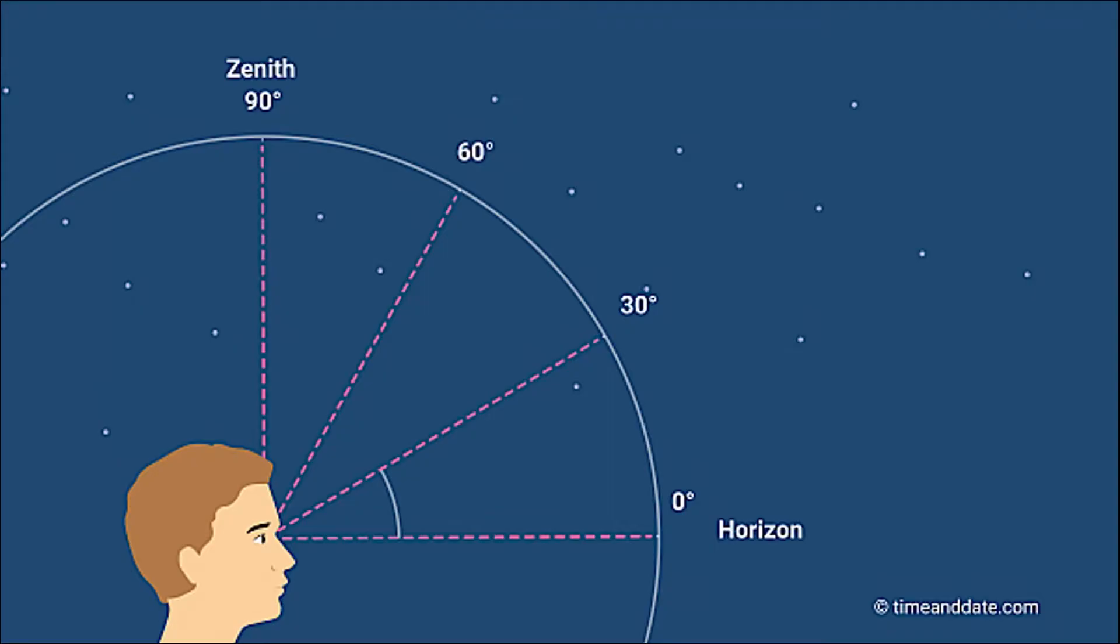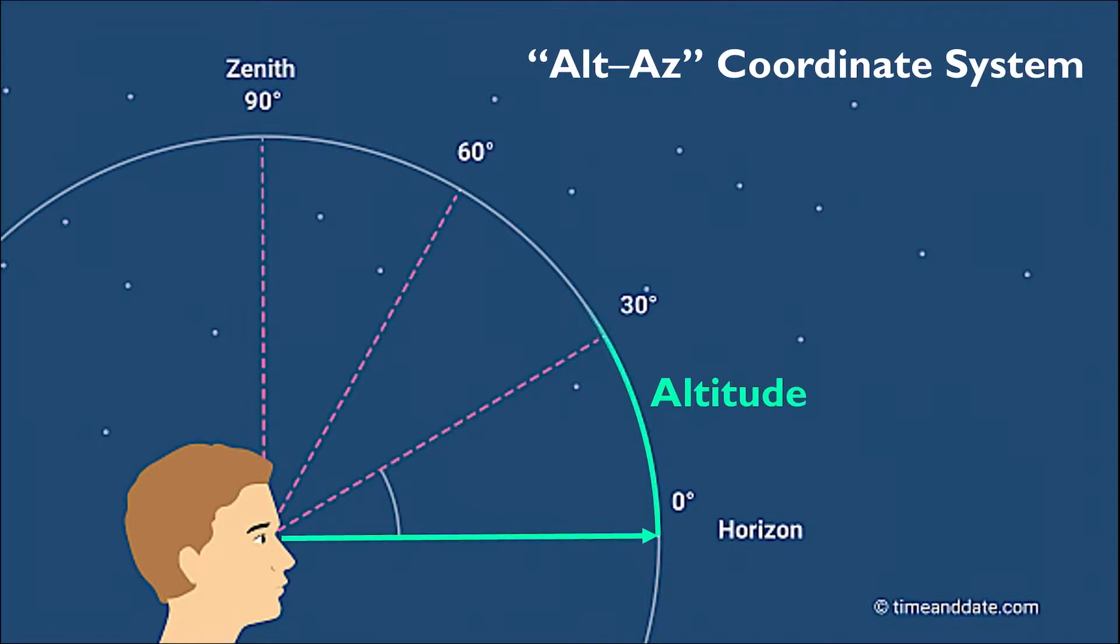In the horizontal coordinate system, sometimes also called the alt-az coordinate system because of its coordinates, you are the center. The horizontal coordinate or the altitude starts at exactly zero degrees on the horizon directly in front of you, going upwards to the zenith or the point directly overhead where the altitude is 90 degrees.